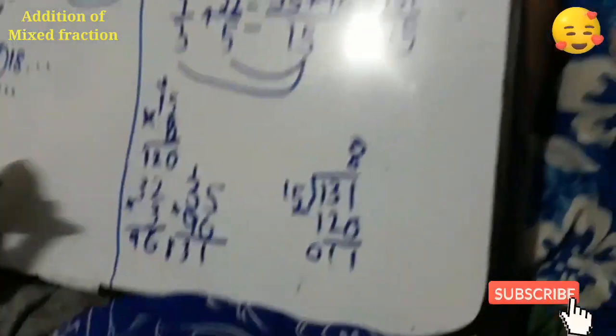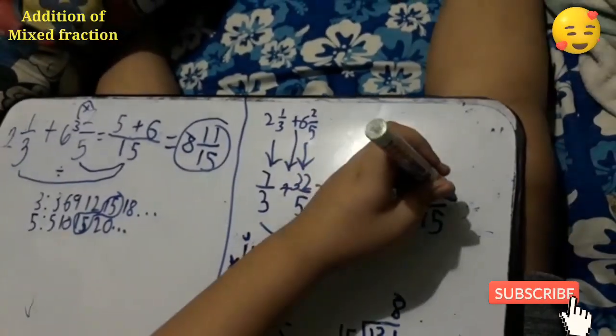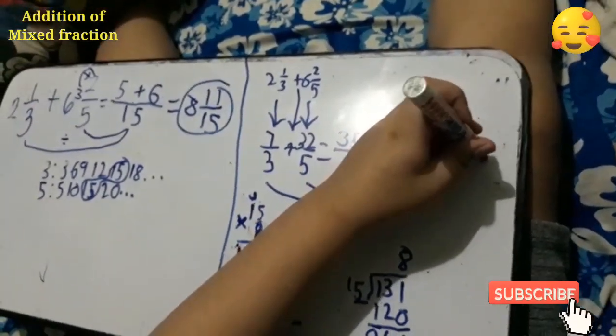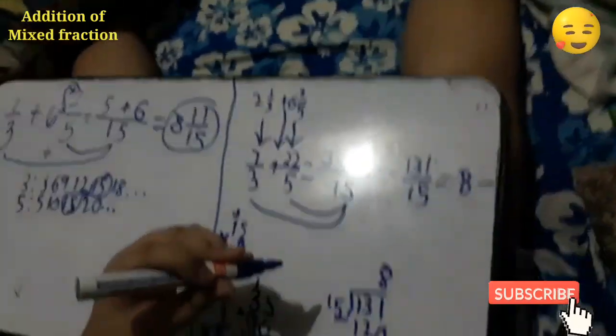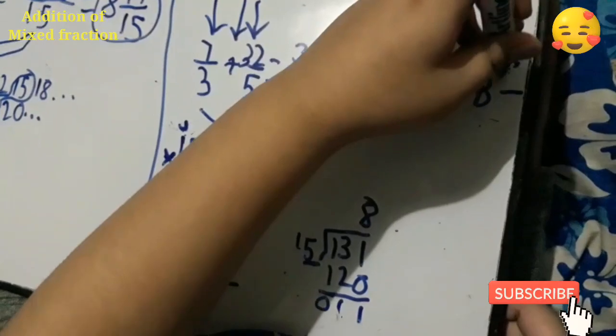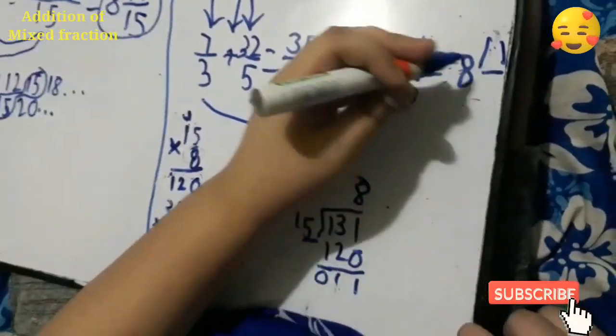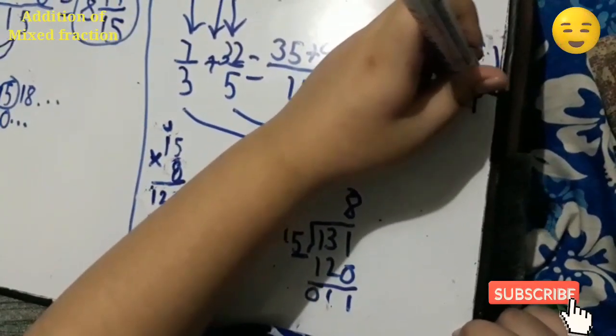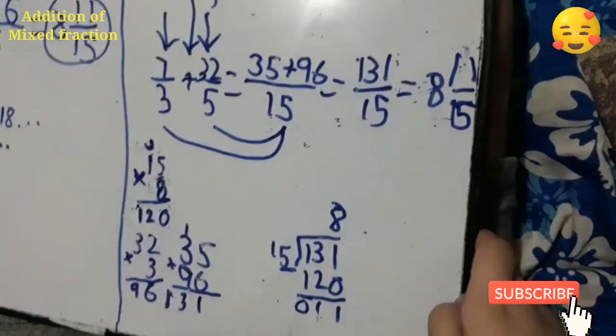What would be the final answer? All you have to do is put an equals sign. We're going to put here the whole number is 8, the quotient. Then the remainder is the numerator. The remainder is 11. And the divisor is the denominator. Is it same? So the answer is 8 and 11 over 15.